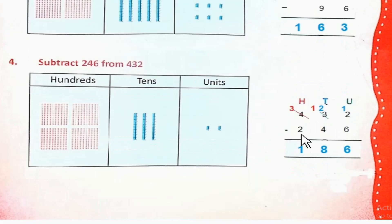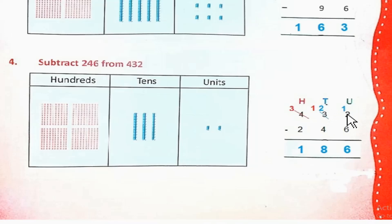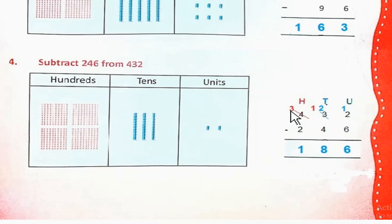Subtract 246 from 432. 432 से 246 minus करें। 2 से 6 नहीं निकाला जा सकता, तो 3 से borrow करेंगे — 1 ten borrow करेंगे तो यह 2 tens रह जाएगा और यह 12 हो जाएगा। 12 minus 6 = 6। अब 2 से 4 minus नहीं हो सकता, तो 4 से 100 borrow करेंगे — यह 3 रह जाएगा। So the answer is 186.